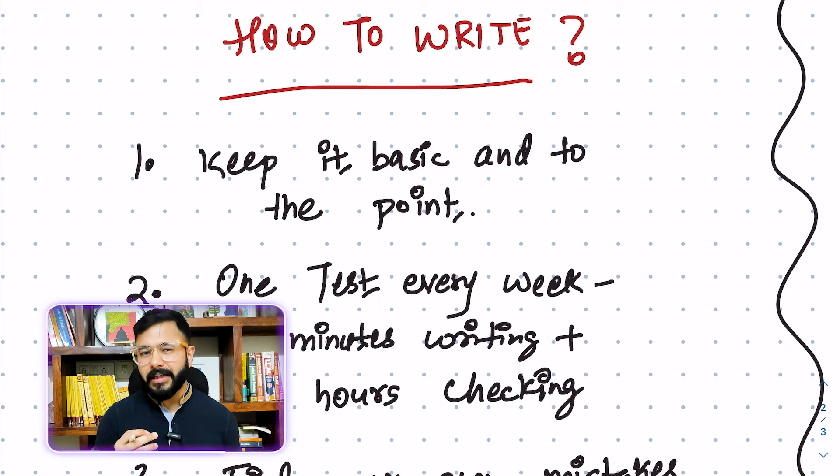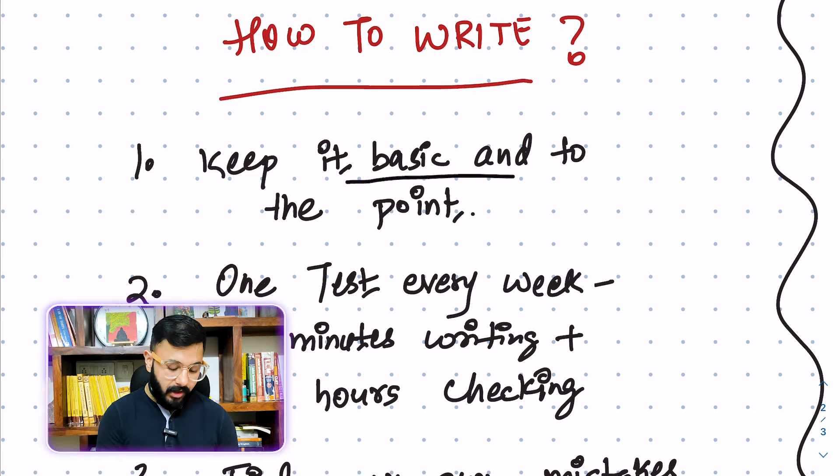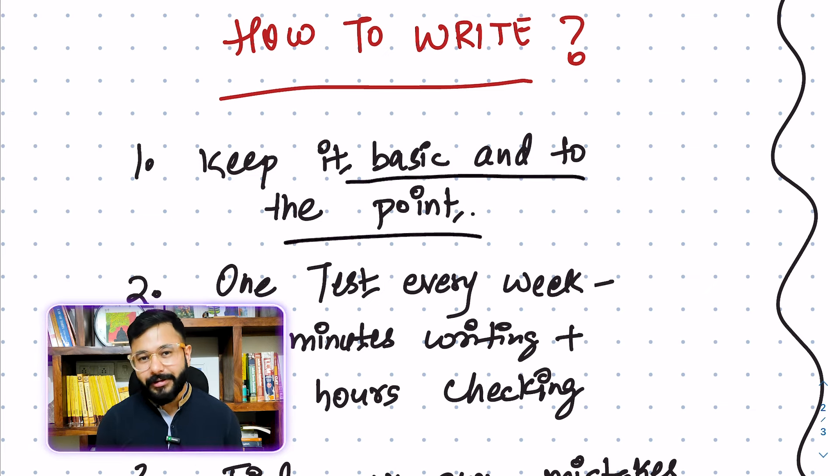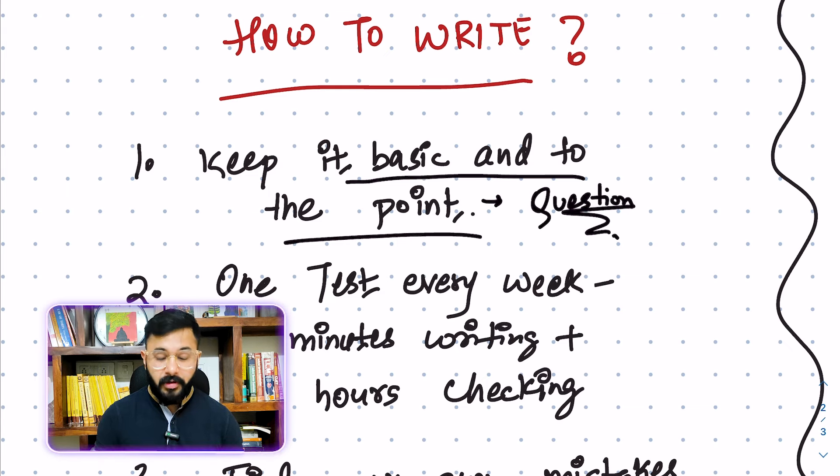Let's get to the first one which is how to write. The first one is to keep it basic and to the point. I was watching some videos yesterday and I was also checking some of the students' answers last night because exam is over the head and a lot of students are writing now. And I felt that there is a resistance towards keeping things basic because we as students feel that we are trying to impress the examiner and in that desire, we forget that basic is good. There's nothing wrong with keeping your writing basic. So keep it basic. Keep it to the point. How do you keep it to the point? By understanding the question, the need of the question.